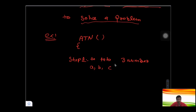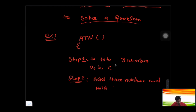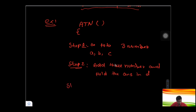Step 2 is to add those three numbers and hold the answer in another variable, which I'll call D. Step 3 is simply to print the answer — print D. These are the steps of the algorithm to add three numbers.